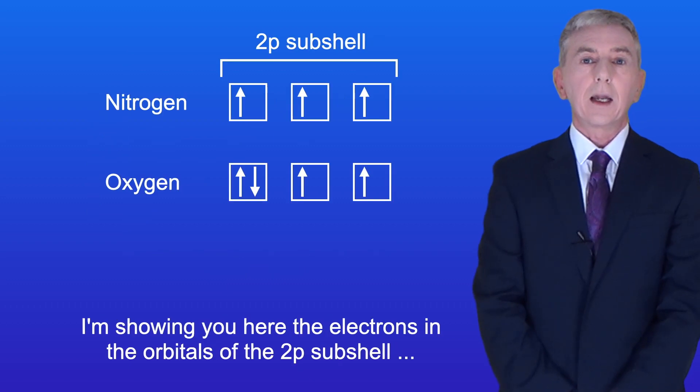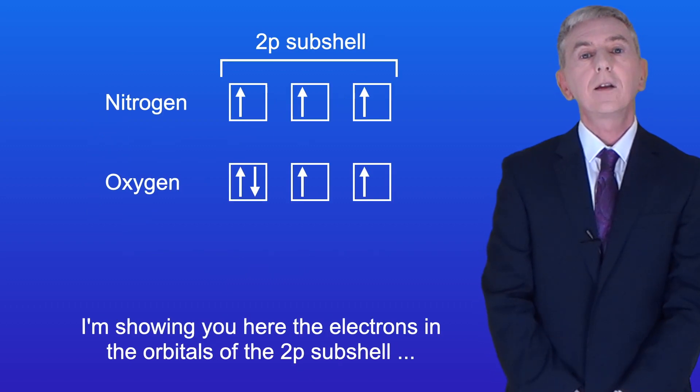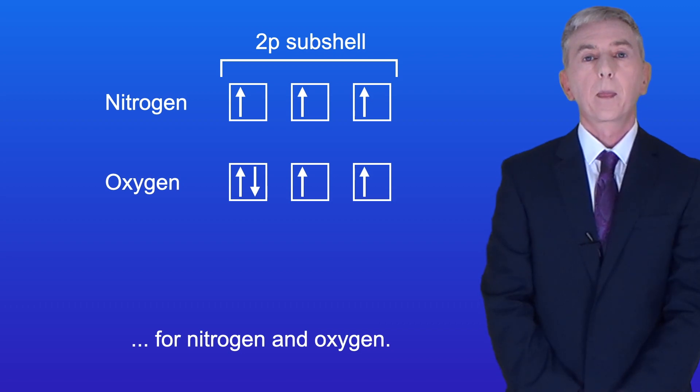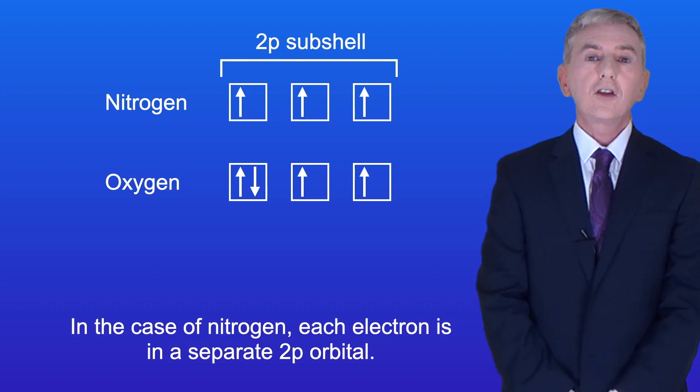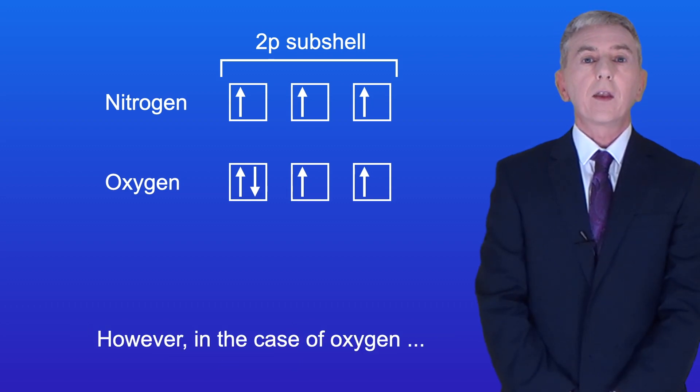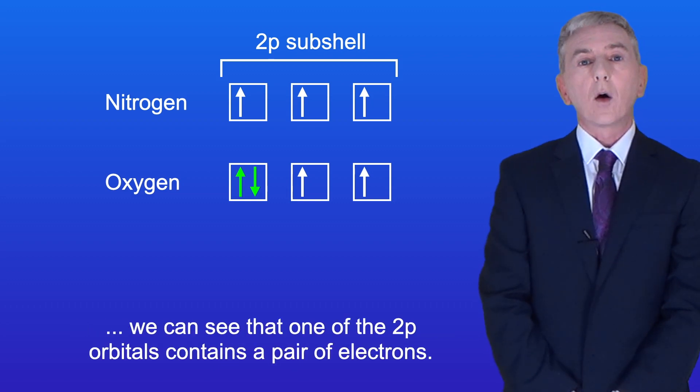I'm showing you here the electrons in the orbitals of the 2p subshell for nitrogen and oxygen. In the case of nitrogen each electron is in a separate 2p orbital. However in the case of oxygen we can see that one of the 2p orbitals contains a pair of electrons.